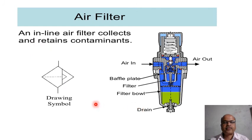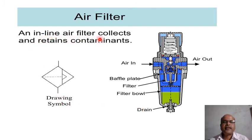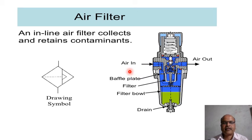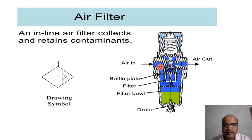This is the drawing symbol of the air filter as previously mentioned. An in-line air filter collects and retains contaminants. Air enters on one side, passes through a baffle plate and filter ball, and clean air is obtained from the other side. The drain is located at the bottom.